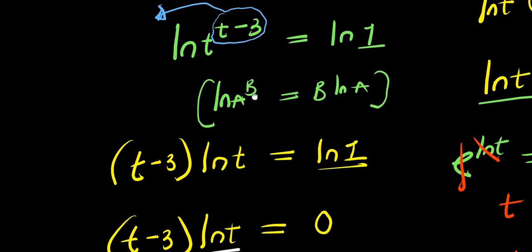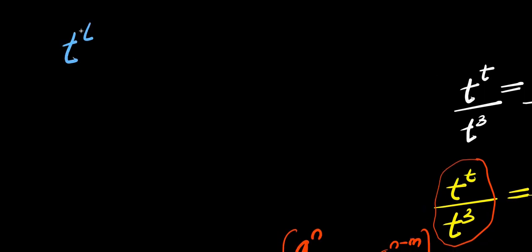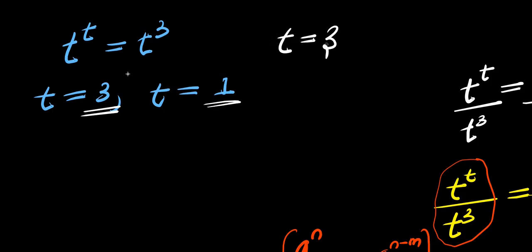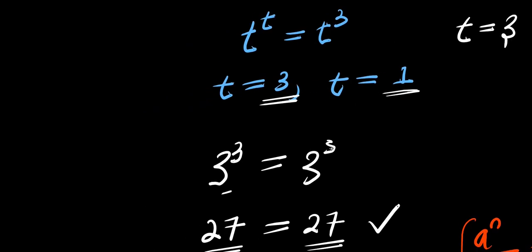These are the two solutions: the equation is t to the power t equals t to the power 3, and we have t equals 3 and t equals 1. Let's test them. Starting with t equals 3: 3 to the power 3 equals 3 to the power 3. 3 times 3 times 3 is 27, and the right side is also 27. Left-hand side equals right-hand side — t equals 3 has satisfied the equation.